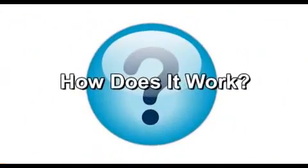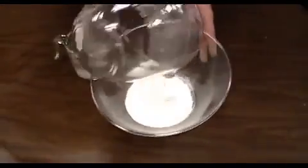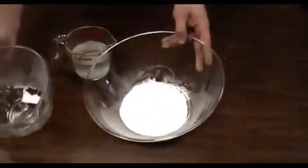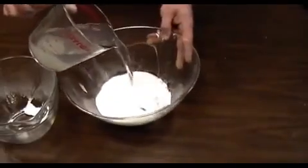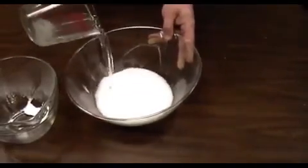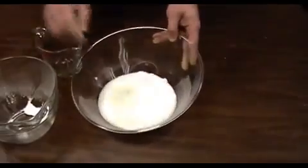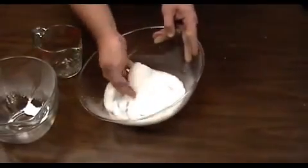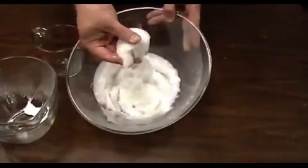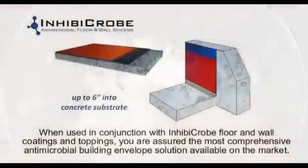To demonstrate how this pretreatment product reacts within a concrete slab, we take cement powder and simply add the pretreatment product. As the product permeates, which is simulated here by agitation, it begins to react with the alkali in the cement powder and quickly forms a permanent antimicrobial aqueous gel, integrally sealing the concrete, adding density, and increasing the bond strength of subsequent coatings.